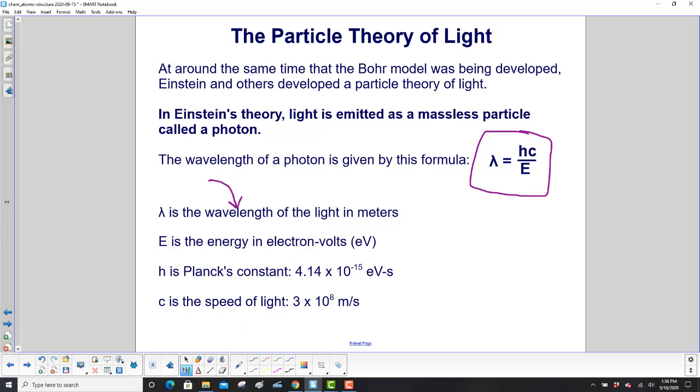Wavelength, which is lambda, is equal to Planck's constant times the speed of light divided by its energy. So here you go. Lambda is the wavelength of the light in meters. E is the energy in electron volts. H is Planck's constant, 4.14 times 10 to the minus 15th electron volt seconds. And c is the speed of light, 3 times 10 to the eighth meters per second.